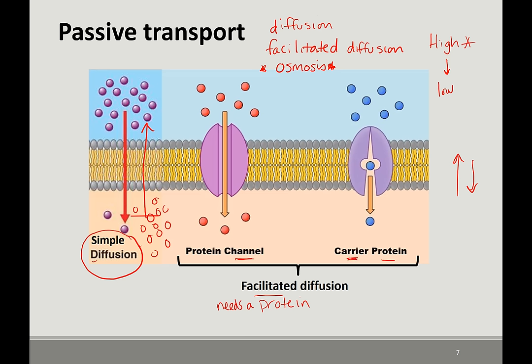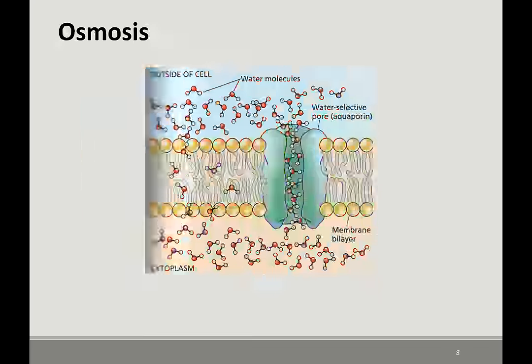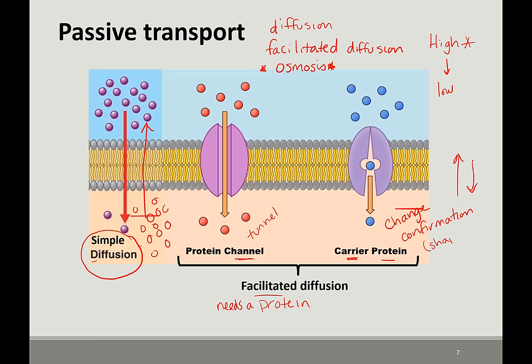The difference between a protein channel and a carrier protein: a protein channel is like a tunnel — it's open and things can go through, and it's still specific. A carrier protein undergoes a conformational change, meaning the protein itself actually changes shape as it moves a molecule across the membrane. Both are considered transport proteins, just different types. Facilitated diffusion is for any solute — any molecule other than water — moving from high to low concentration.